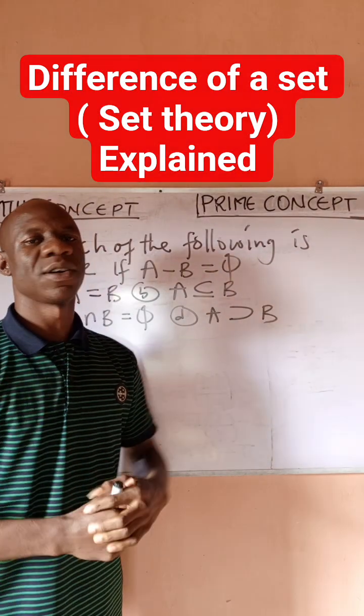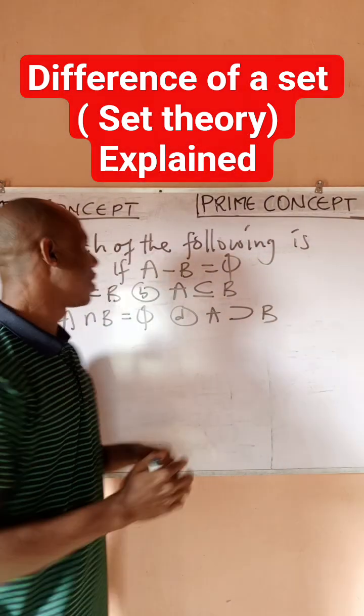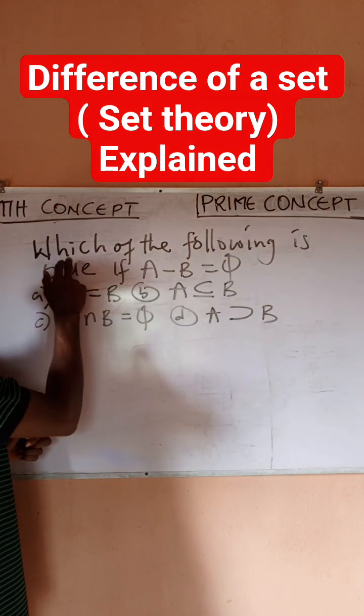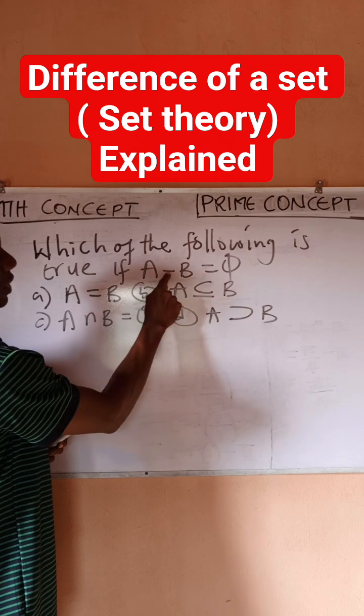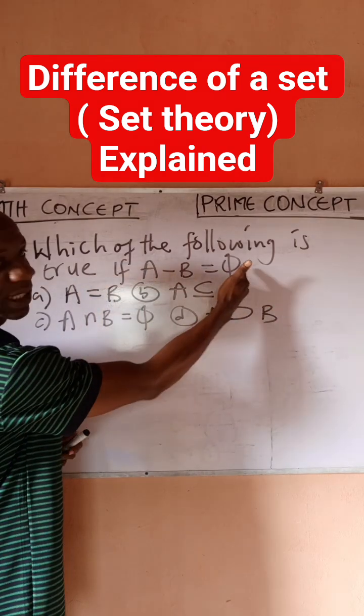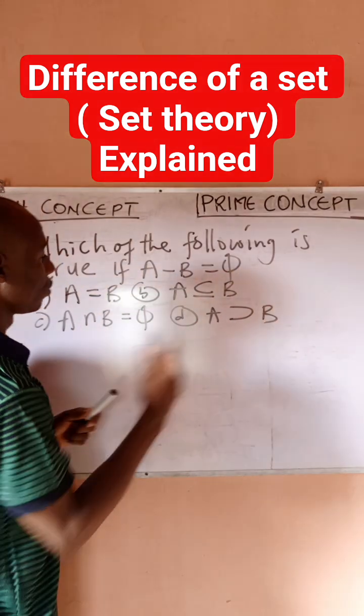Hello guys, this is Prime Concept. I want to explain this problem on sets. The question says: which of the following is true if A difference B is an empty set? Then which of the following options is true?